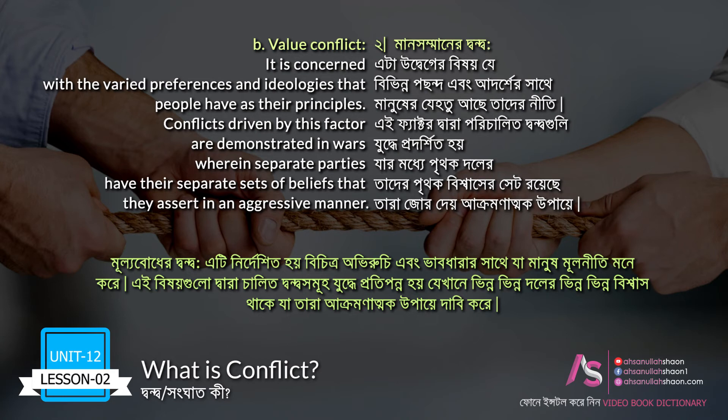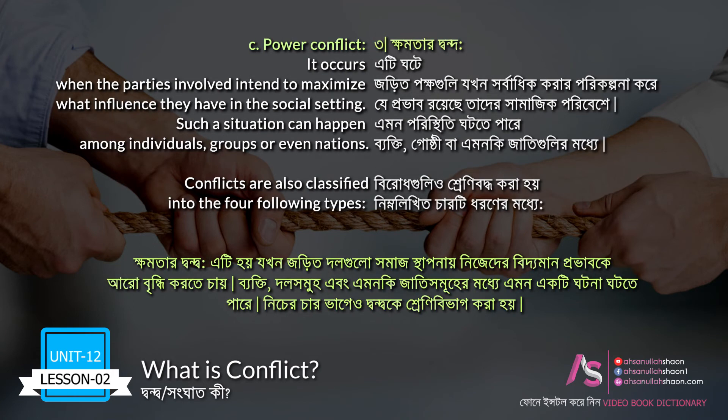B: Value conflict — it is concerned with the varied preferences and ideologies that people have as their principles. Conflicts driven by this factor are demonstrated in wars wherein separate parties have their separate sets of beliefs that they assert in an aggressive manner. C: Power conflict — it occurs when the parties involved intend to maximize what influence they have in the social setting. Such a situation can happen among individuals, groups, or even nations.